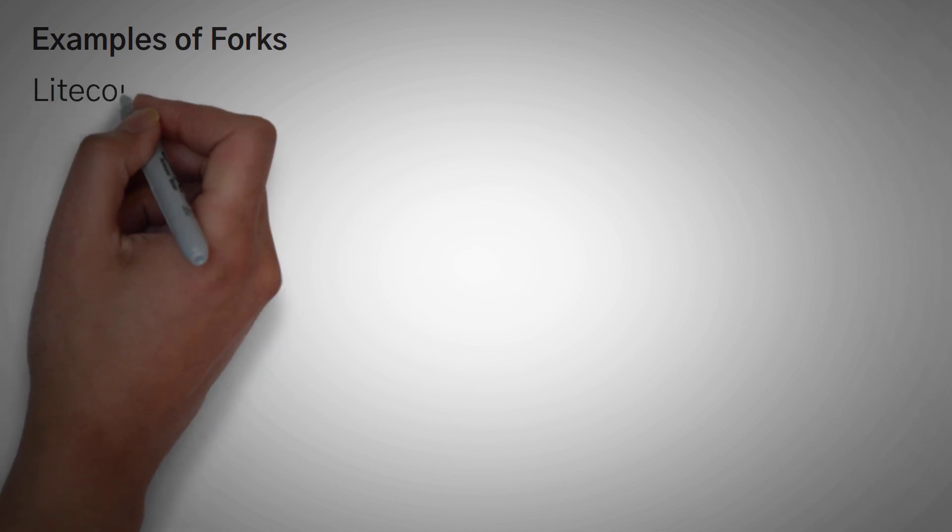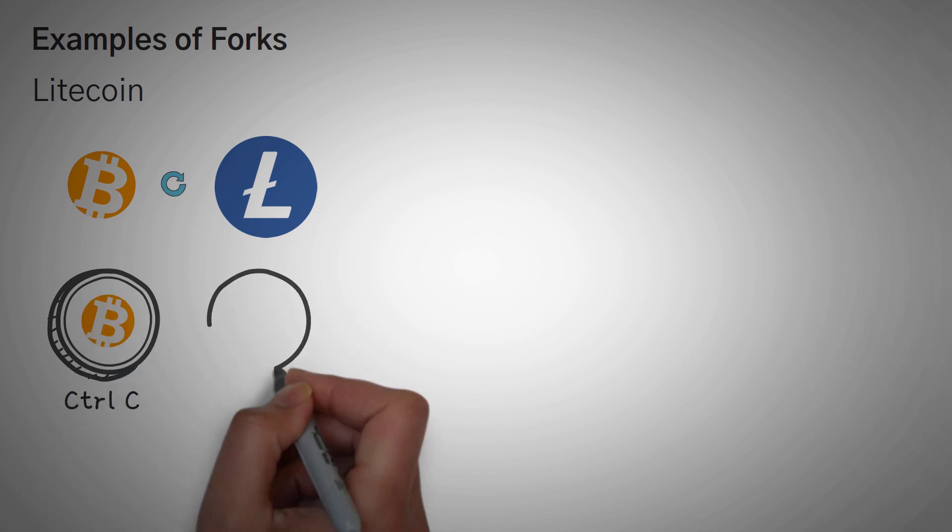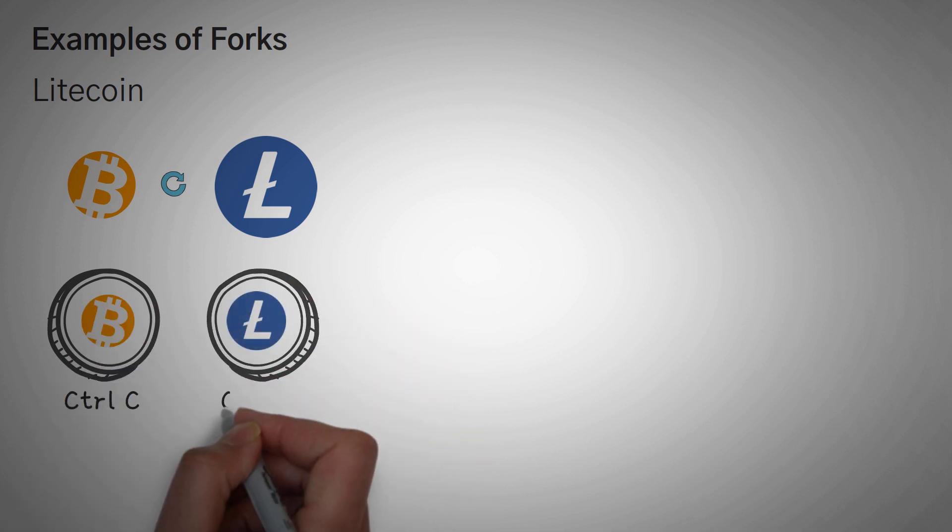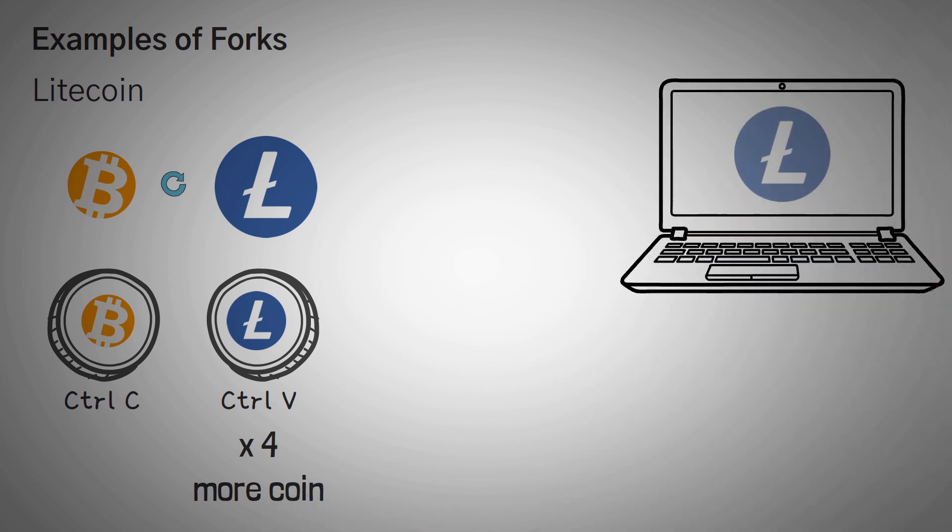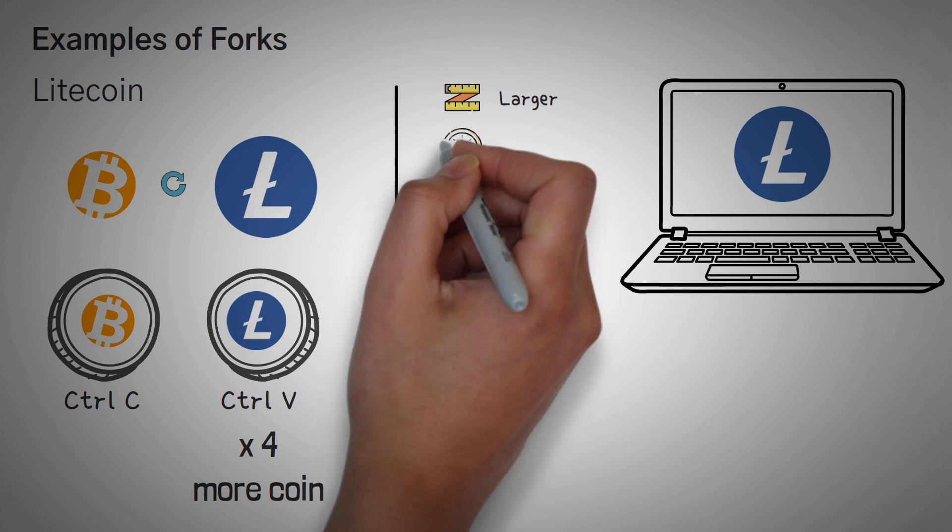Now, Ethereum Classic is a great example of a fork, but there are also other famous forks as well. For example, Litecoin. Now, Litecoin is actually a fork of Bitcoin, meaning they copied the original code and then changed it purposefully so that it's a whole different coin. In fact, some people would say that they made some improvements. One of the changes was that they made four times as many total Litecoins than Bitcoins. The fork also made the block size larger and the block time shorter,